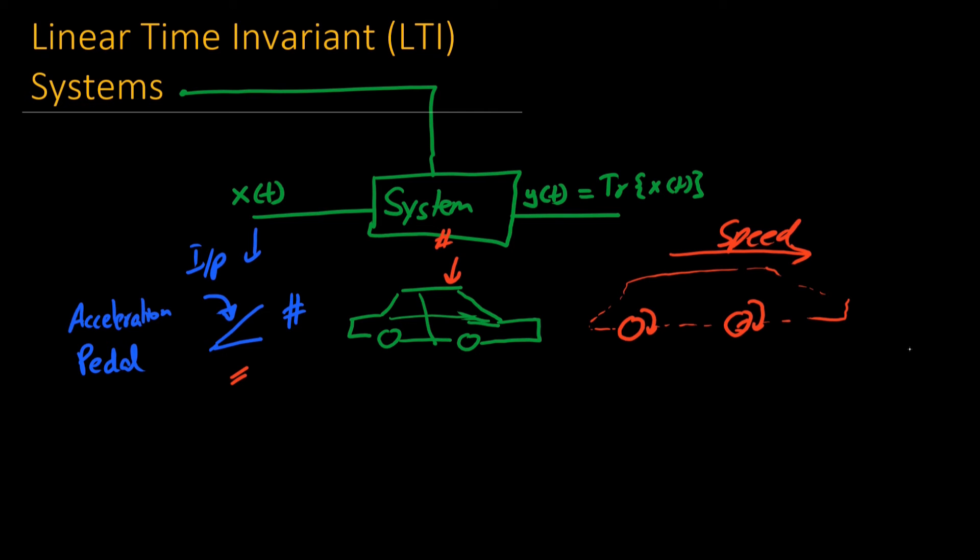Say we are applying a force of 10 units and this translates to a speed of 50 km per hour. Now if we apply this force at 10 am or at 10 pm, it doesn't matter. We would again have this 50 km per hour of speed. So this means that this system is not varying with respect to time. Therefore it is a time invariant system.